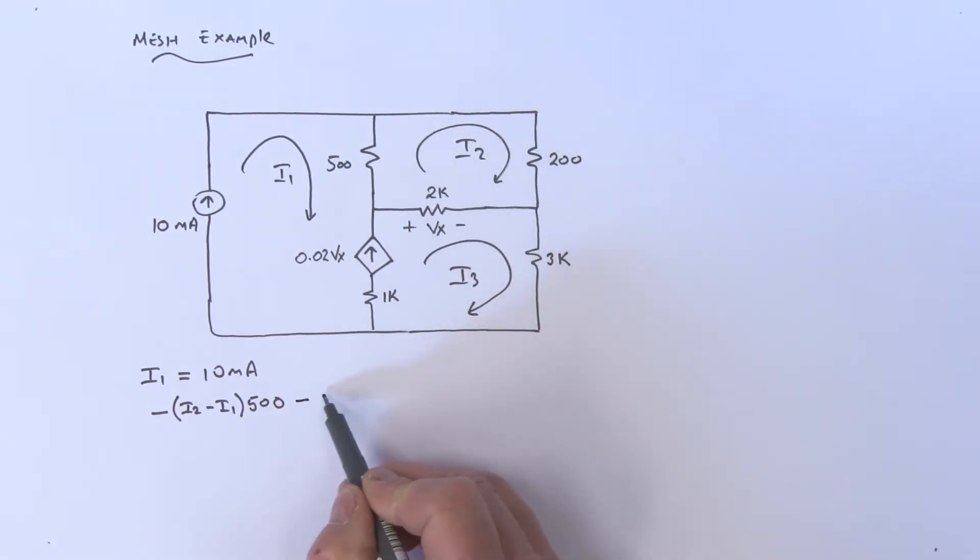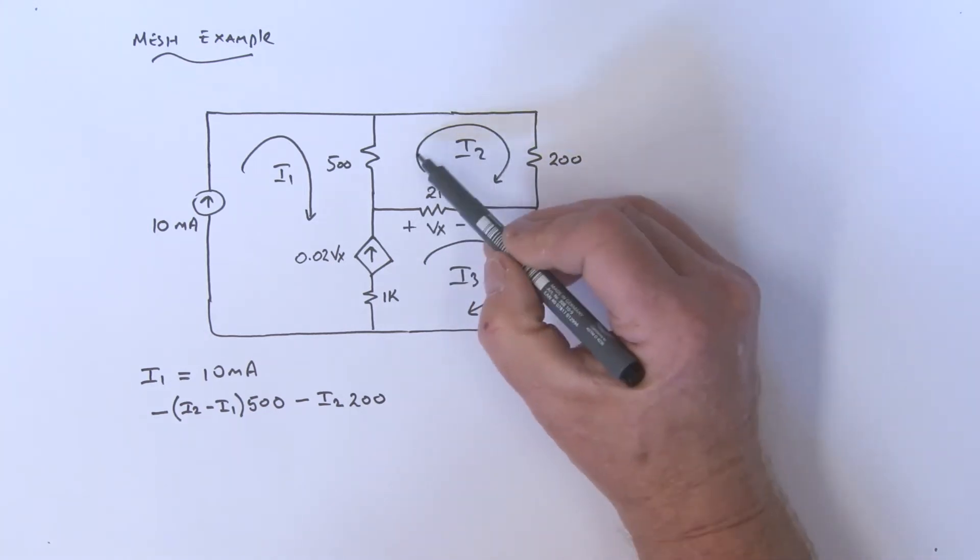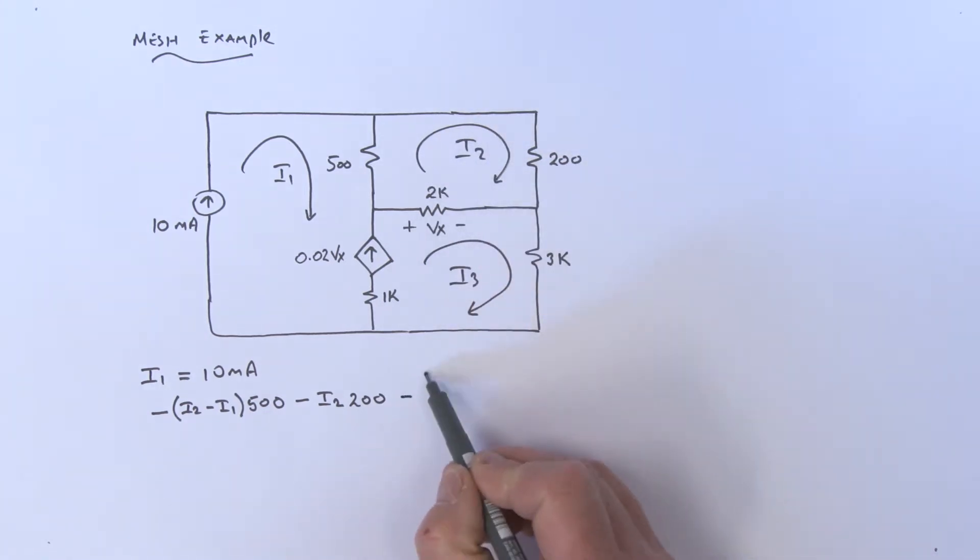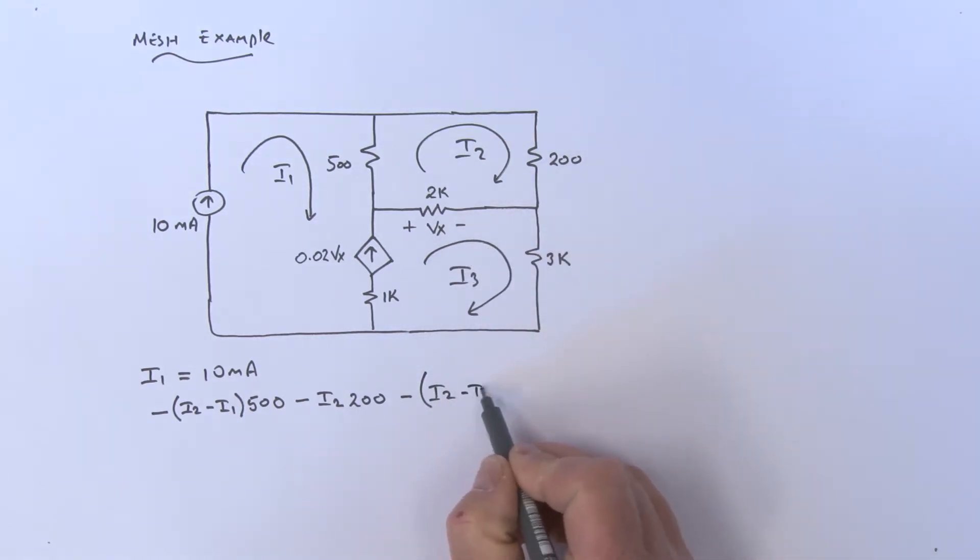Then I've got the voltage across this guy, which is minus i2, and that's times 200. Then of course I got the voltage across this 2k, so that's i2 minus i3 in the bracket, and that's times 2k. All of that is equal to 0. So that's another equation that I've got.